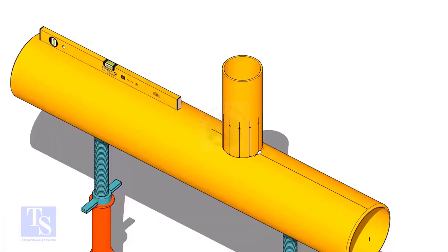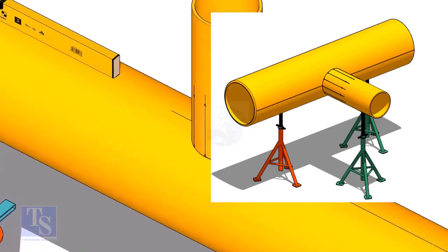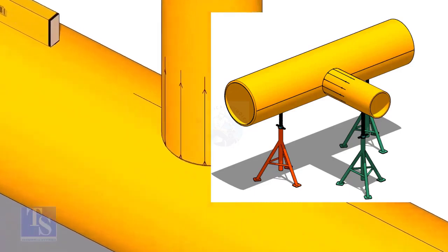Tack weld the branch on the header just to stand it vertically. If the pipes are large, you can do it in the horizontal position also.